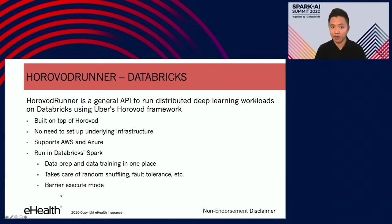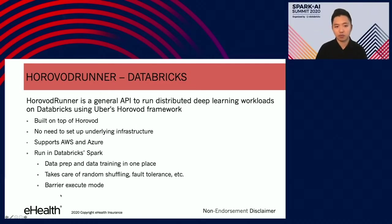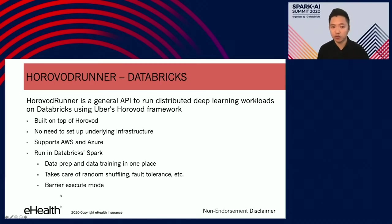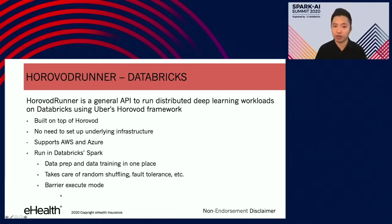So Databricks came out and provided the Horovod runner. The Horovod runner is a general API to run distributed deep learning workloads on Databricks using the Horovod framework. It is pre-built on top of Horovod with no need to set up the underlying infrastructure. If you're using runtime 5.0 or above, you can enjoy Horovod right out of the box. You can choose the cloud provider from AWS or Azure. Since it runs on Databricks, it runs on top of the Databricks Spark ecosystem, so you have data prep and data training in one place.